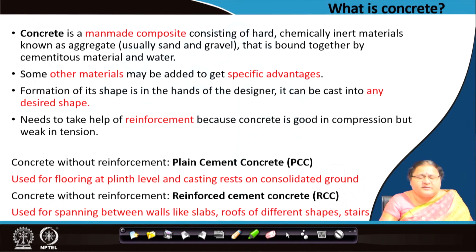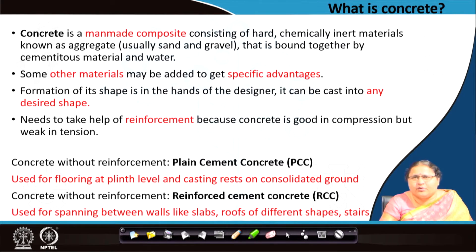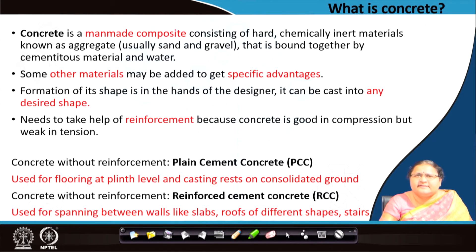Concrete is a manmade composite consisting of hard chemically inert materials known collectively as aggregates, which has two parts: fine aggregate and coarse aggregate. Fine aggregate usually refers to sand, and coarse aggregate usually refers to gravel or stones of a particular dimension. As we go into details of the fine aggregate and the coarse aggregate, there is also a cementitious material which in the context of concrete is mostly cement, but we also use lime and gypsum as a binder.